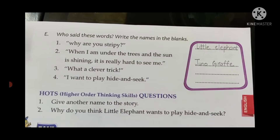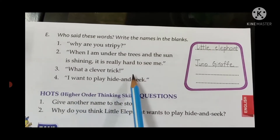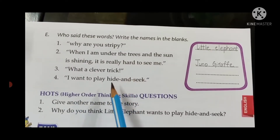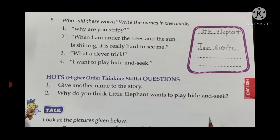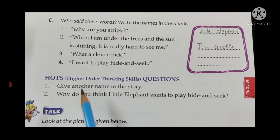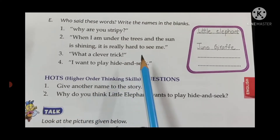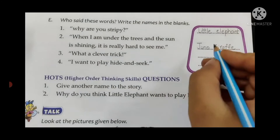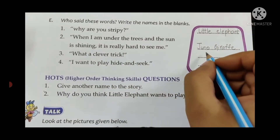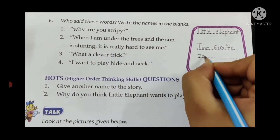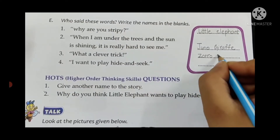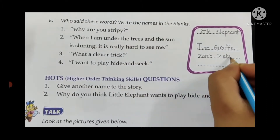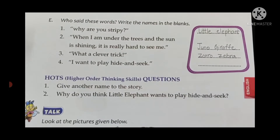Next: 'What a clever trick.' Who said 'What a clever trick,' children? The Little Elephant was hiding in plain sight. Which animal said this? It was Zorro the Zebra. Write: Z-O-R-R-O, Z-E-B-R-A — Zorro Zebra.